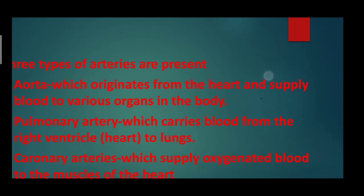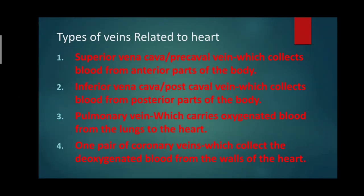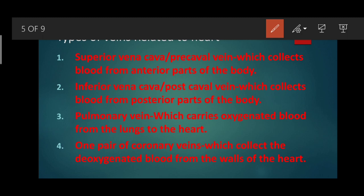Types of veins: Superior vena cava (also called pre-caval vein) collects blood from the anterior parts of the body like the head and neck. Inferior vena cava (post-caval vein) collects blood from the posterior parts such as the legs, stomach, and back. Pulmonary vein carries oxygenated blood from the lungs to the heart — it is the exception, as all other veins carry deoxygenated blood. One pair of coronary veins collects deoxygenated blood from the walls of the heart.